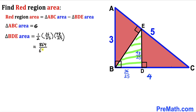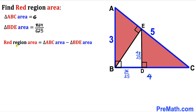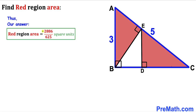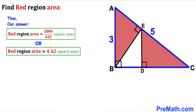For the final step, the red shaded region area equals 6 minus 864/625. Subtracting and simplifying, the result is 2886/625. So our red shaded region area is 2886/625 square units, which is approximately 4.62 square units. Thanks for watching, and please don't forget to subscribe to my channel for more exciting videos!